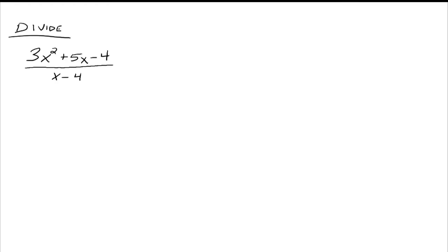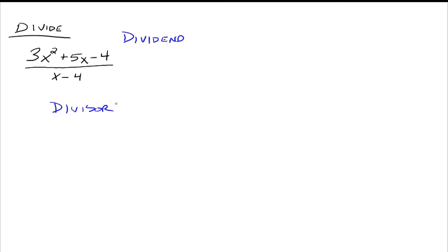Here's a problem. We want to divide 3x squared plus 5x minus 4, and we're going to divide that whole thing by x minus 4. So we are dividing x minus 4 into 3x squared plus 5x minus 4. The x minus 4 is called the divisor, and what you're dividing into is called the dividend. So here the dividend is 3x squared plus 5x minus 4, and the divisor is x minus 4.